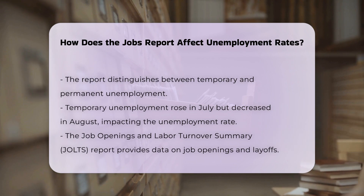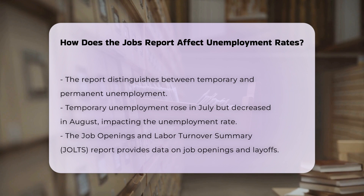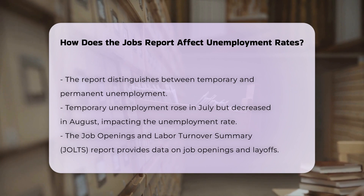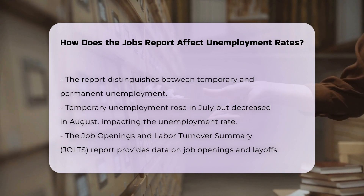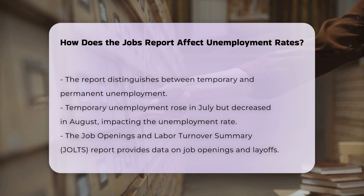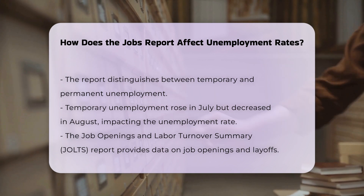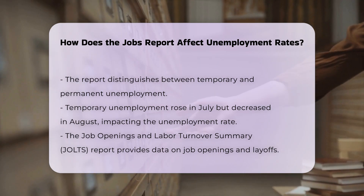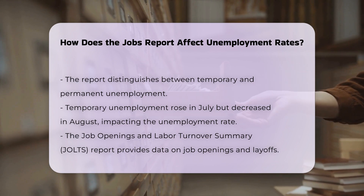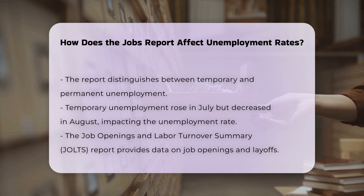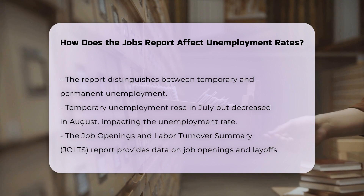The Job Openings and Labor Turnover Summary report, part of the jobs data, shows the number of job openings and the rate of layoffs. In July 2024, job openings were 7.7 million, down from the previous year, and the layoff rate slightly increased to 1.1%. These indicators reflect the labor market's health and can influence future unemployment rates.